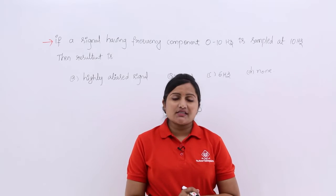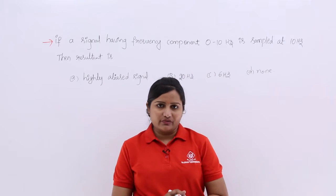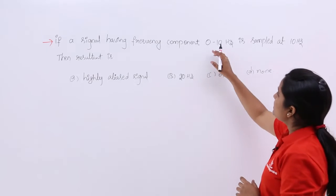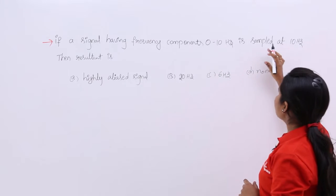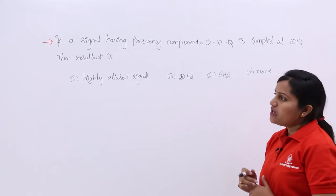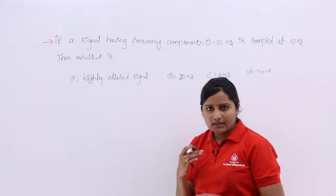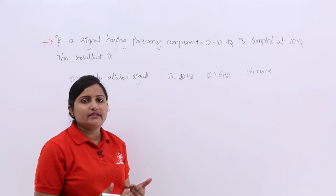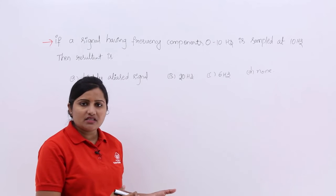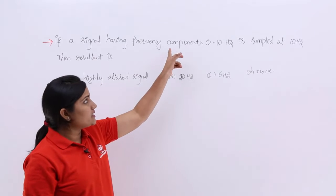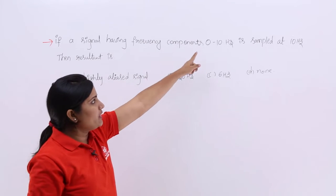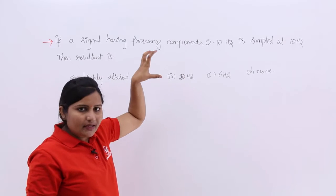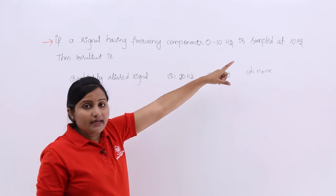In this video, we are going to discuss a problem related to sampling frequency. Here you can observe the problem: if a signal having frequency components from 0 to 10 Hz is sampled at 10 Hz, what is the resultant signal? A signal having frequency components from 0 to 10 Hz means it has frequency components like 0, 1, 2, 3 Hz — minimum frequency is 0, maximum frequency is 10 Hz. That signal is sampled at 10 Hz.